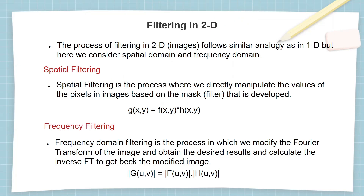Now let us consider two-dimensional filtering in digital image processing. It almost follows a similar analogy as the one-dimensional filtration process. In two-dimensional filtering we also have spatial domain and frequency domain. In spatial domain filtering we directly manipulate the values of pixels of images based on the filter developed, whereas in frequency domain filtering we first calculate the discrete Fourier transform of the image and then manipulate the values of the DFT with the required filter.